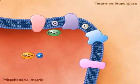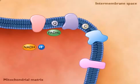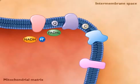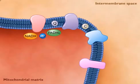When glucose is oxidized during glycolysis and the Krebs cycle, the coenzymes NAD and FAD are reduced to NADH and FADH2, inside the mitochondrial matrix.